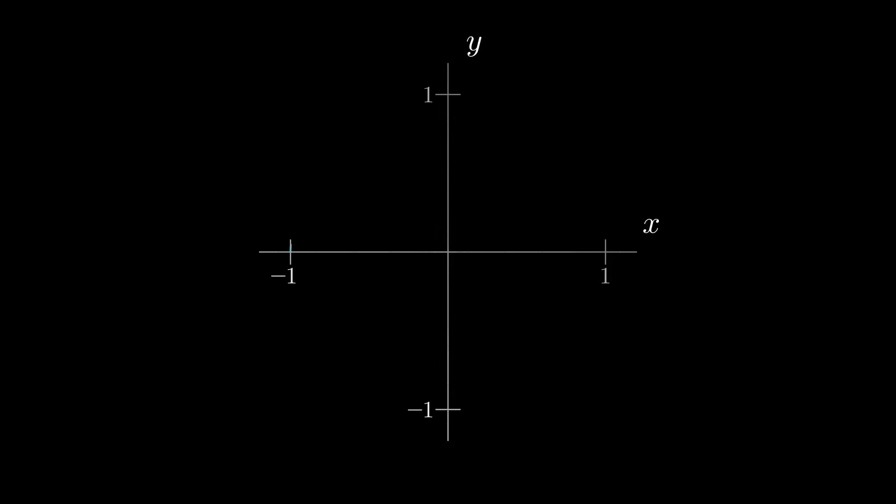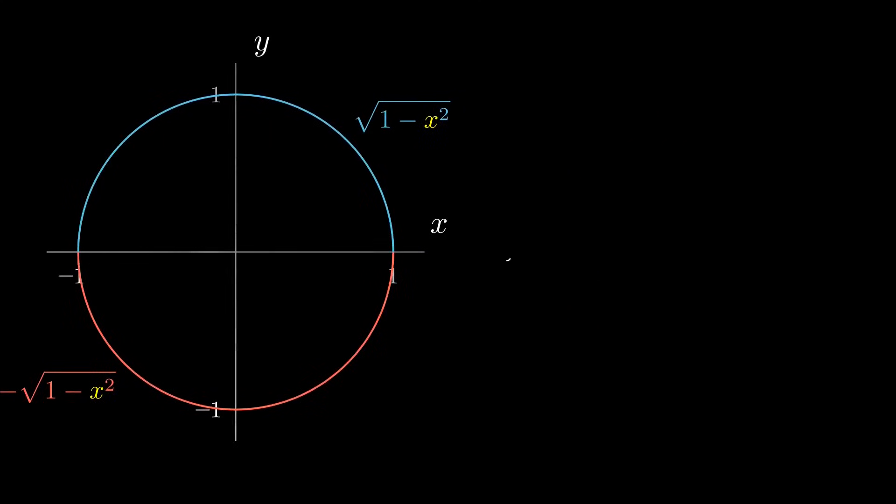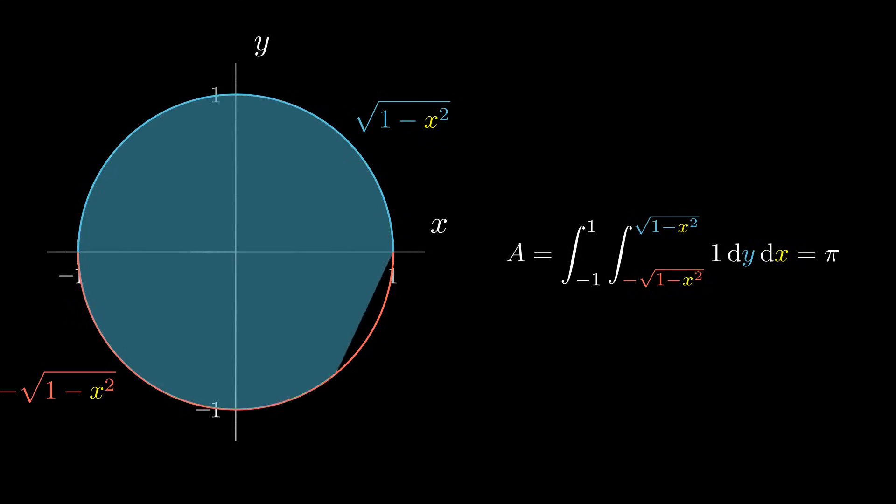Now, let's formalize this idea a bit more. In the previous example, what we did was to compute this integral, which can be seen as calculating the volume of the cylinder whose base is the unit circle and whose height is 1.